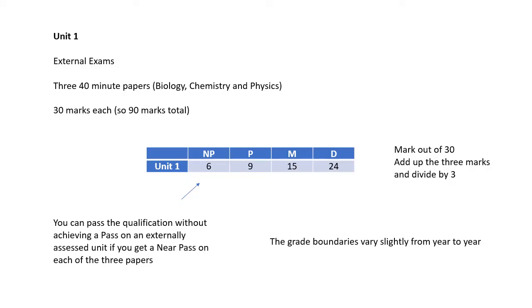The near pass was brought in because an awful lot of students find unit one very hard and they were struggling to get a pass. And if you didn't get a pass, then you failed it completely. So they brought in this near pass. You can pass the qualification without achieving a pass on an externally assessed unit, which is unit one and unit three. If you get a near pass, you don't get very many points for a near pass. So you may not get very much overall, but at least you haven't failed. The grade boundaries I've shown here will vary from year to year. They do vary slightly from year to year.